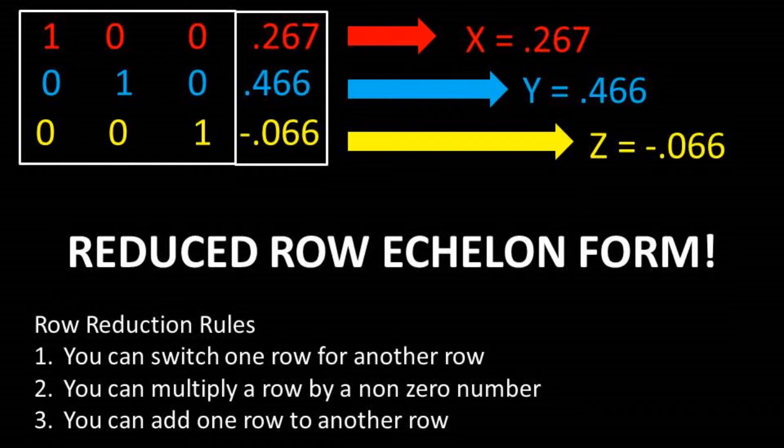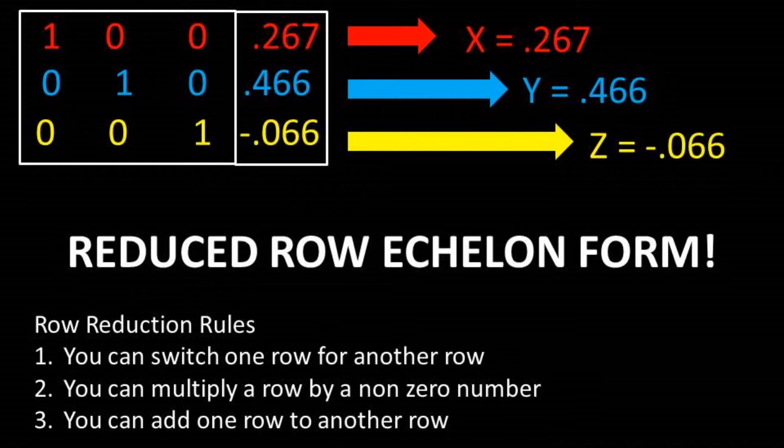I recommend if you are working out one of these problems to go online and look up an online calculator for row reduced forms to ensure that you have done all of your math correctly. You can also plug the x, y, and z that we just found into the original formulas to see if you get the same constant that the formulas are equal to.